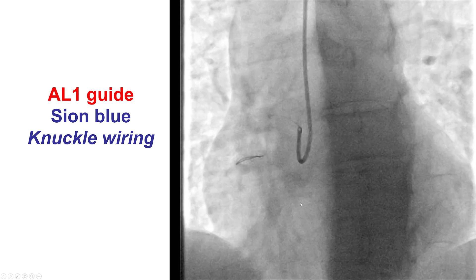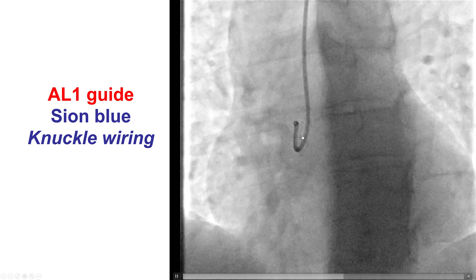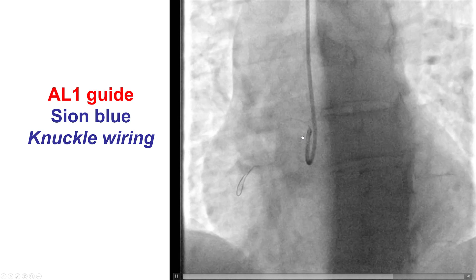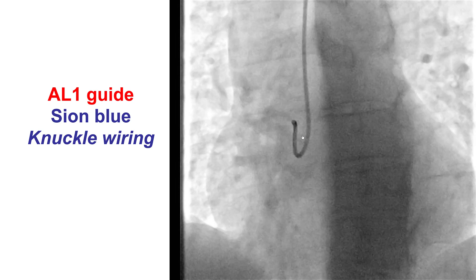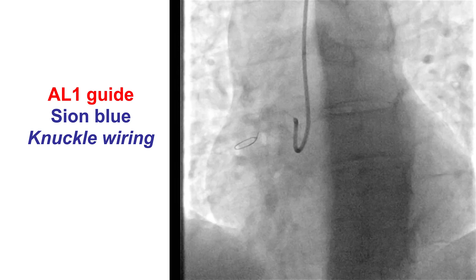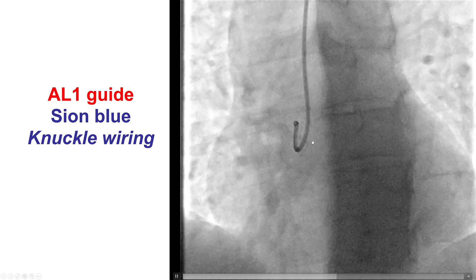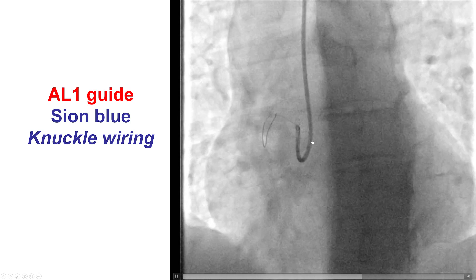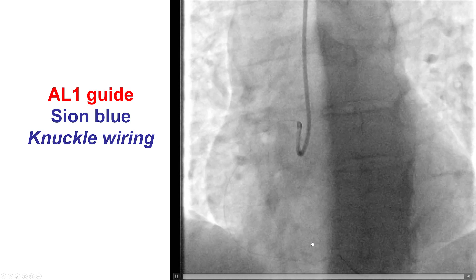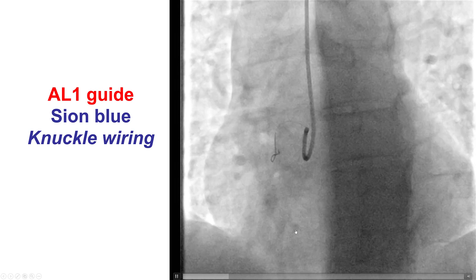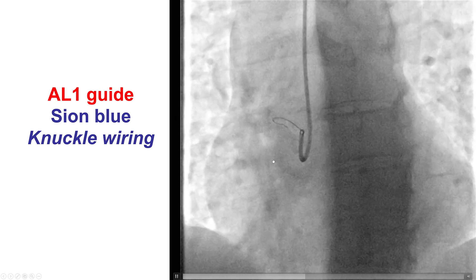And this is the wiring. We used an Amplatz 1 guide catheter, which is our standard guide for performing PCI of the right coronary through radial access. In vessels like these that are very tortuous, sometimes it may be safer and easier to wire by creating a knuckle and advancing the knuckle through the area of thrombus. This was a workhorse Sion Blue guide wire.